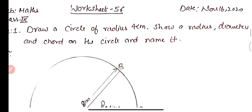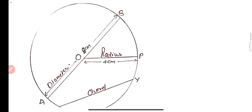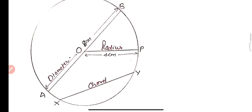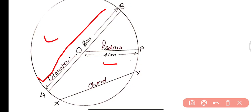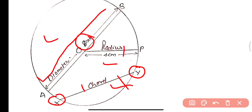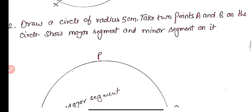Now we have three questions for practice. In question one, we are to draw a circle of radius 4 centimeters and show a radius, diameter, and a chord on the circle, and name them. You can see this on the screen. Here OP is the radius of the circle, AB is the diameter of the circle — which is 8 centimeters, twice the radius — and XY is the chord, touching the circle at two different points X and Y.